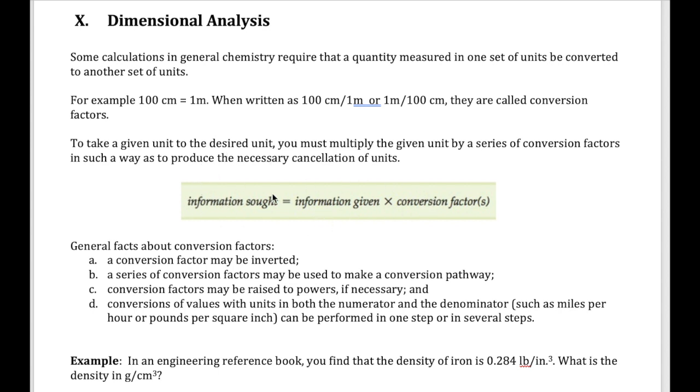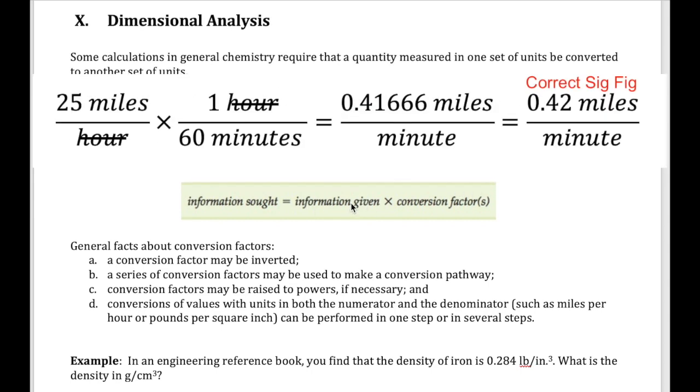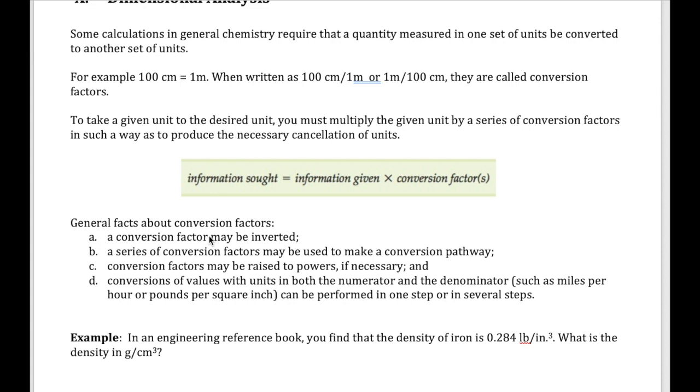A couple of things to keep in mind: the general method is you start with whatever you're given and you have to have your target unit. This is the given unit, this is the target unit. You use your conversion factor to take you from your given unit to your target unit. The idea is always just like approaching fractions—remember in fractions you can cross-cancel, right? If you have a denominator and a numerator, you can cancel quantities on the numerator versus the denominator. Same thing here: if one of your units is in the denominator, you're going to have to put a numerator unit here to cancel that out. If your unit here is in the numerator, you're going to have to find a unit here in the denominator to cancel that one out.